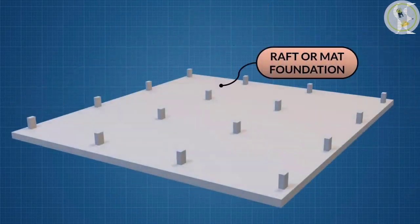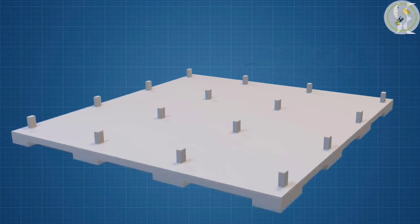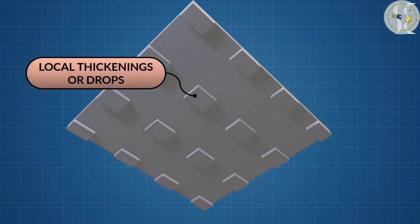A mat or raft foundation is a large slab supporting a number of columns and walls under the entire structure or a large part of the structure. A mat is required when the allowable soil pressure is low or where the columns and walls are so close that individual footings would overlap or nearly touch each other. Mat foundations are useful in reducing the differential settlements on non-homogeneous soils or where there is a large variation in the loads on individual columns.